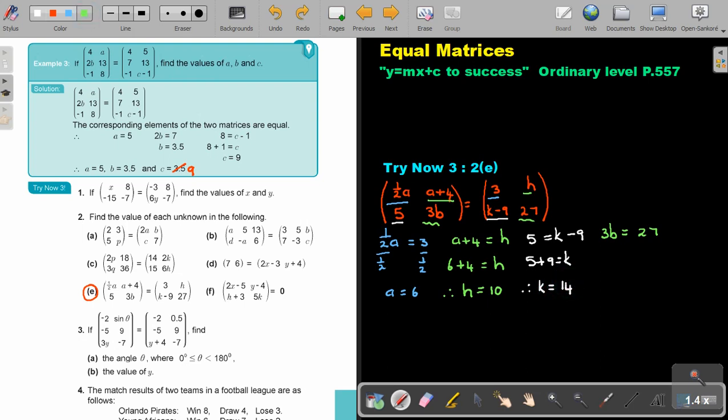And then the next one, 3B. I just divide by 3, and I divide by 3, and the value of B will be equal to 9. So therefore, A will be 6, H is 10, K is 14, the value of B is equal to 9.